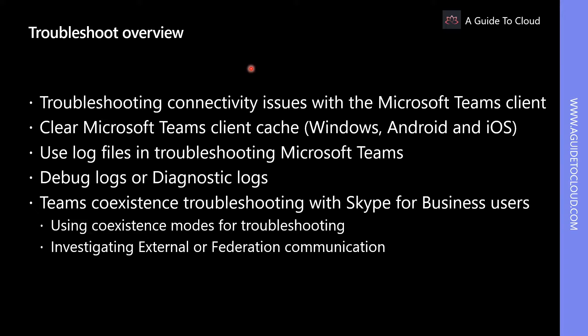Troubleshooting problems within Microsoft Teams may include a wide array of possible areas that you need to investigate, starting from the Teams client up to the co-existent mode settings configured by your Teams administrator. Most issues discovered with the Microsoft Teams client can be tracked back to firewall or proxy connectivity. Verifying the necessary URLs, IP addresses and ports are opened in your firewall or proxy will minimize unnecessary troubleshooting.